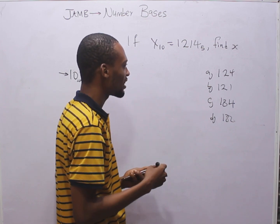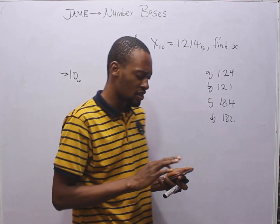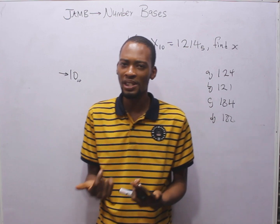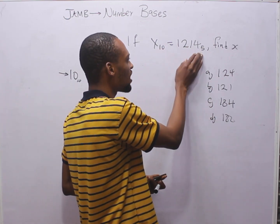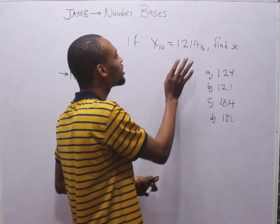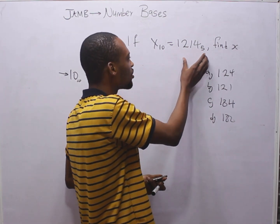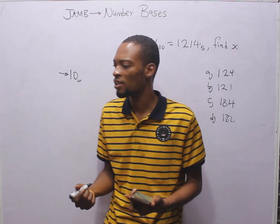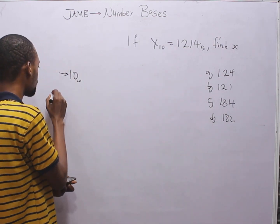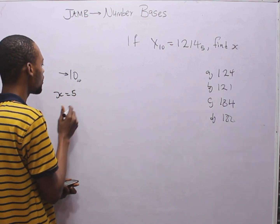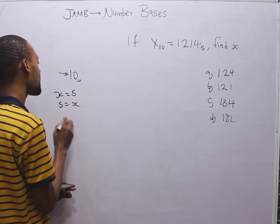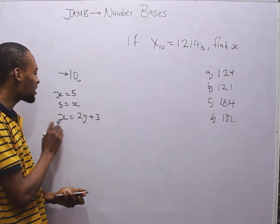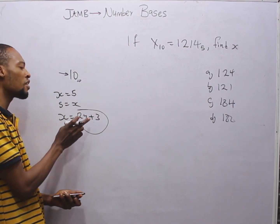How do you answer questions like this? In number bases, when you are given a question in other bases, you need to standardize — try to convert them to base 10. This is already in base 10, and this is in base 5. If S equals this, it means let's find this value in base 10 to make it the same as S. For equations: if S equals 5, it means 5 equals S. If S equals 2y plus 3, you must find a value of y that makes both sides equal.